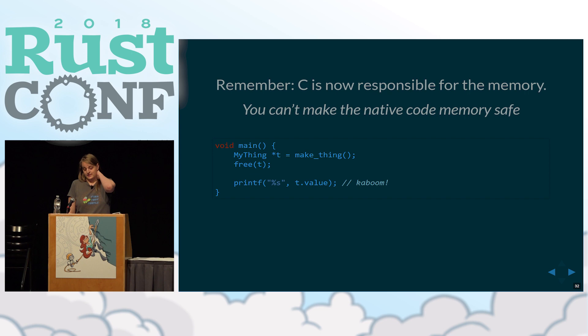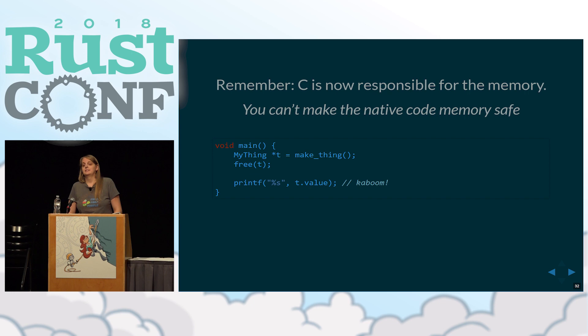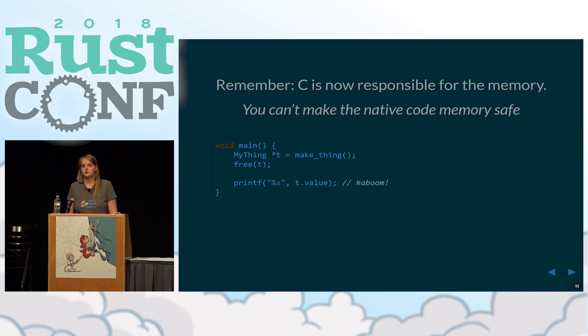From the C side, the make_thing function just returns a pointer, and the my_thing pointer is then on the stack. Something to remember, though, is that you can't make your application memory safe. Rust's guarantee ends when you return back into C code, which means you should not make assumptions about persistence of data - it might be gone, something might write over it, or it might just die before you can do anything with it. So always be prepared when building these APIs for them to have a certain amount of hardening against C code doing something stupid, even if it's unintentional or a bug.